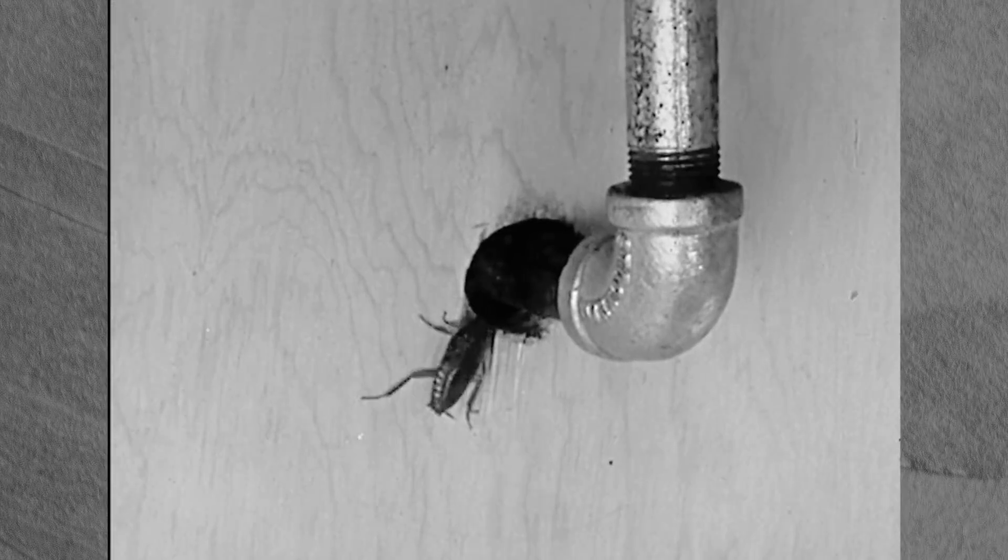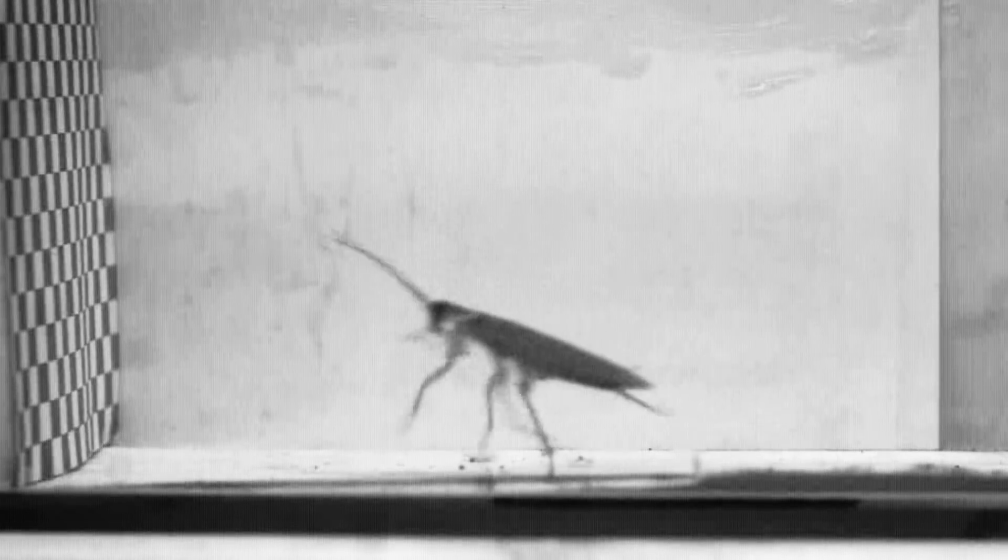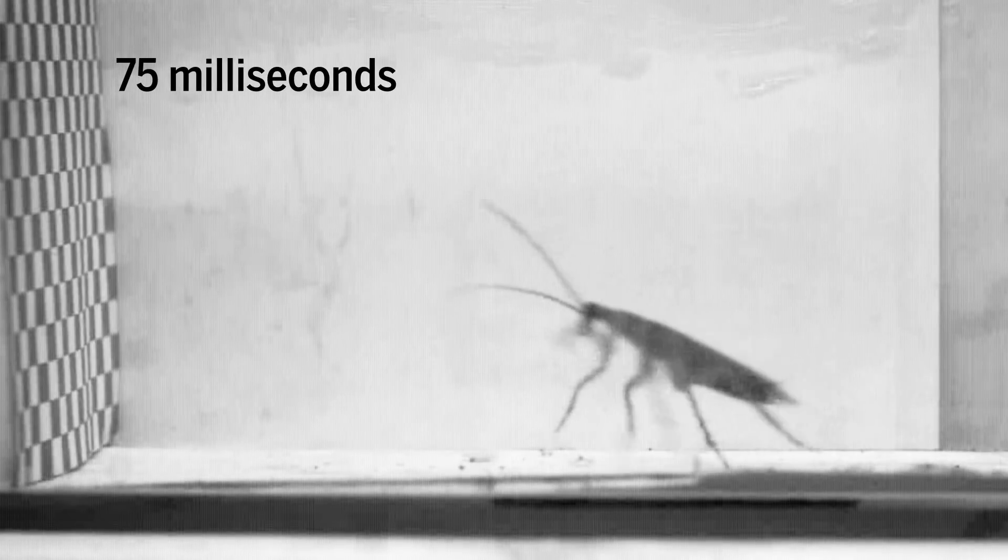These unstoppable insects hit a wall and keep on running up. They use the force of the collision to launch themselves vertically, a process that takes just 75 milliseconds.